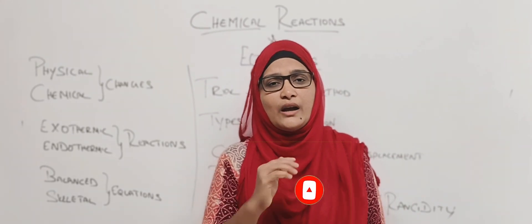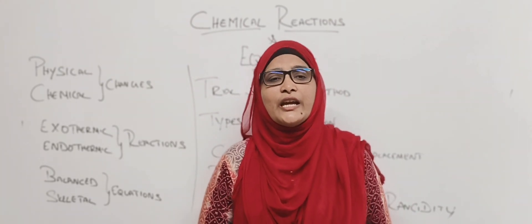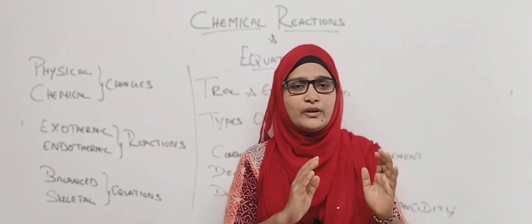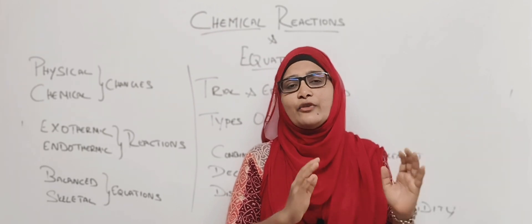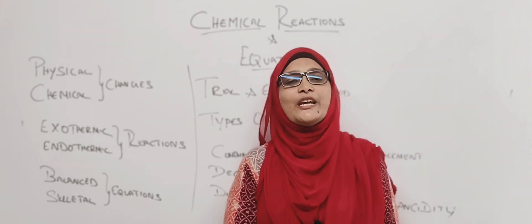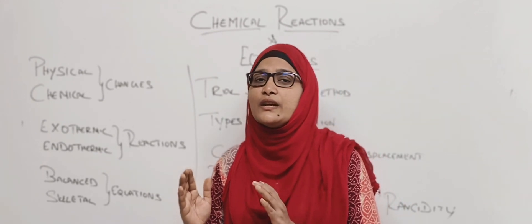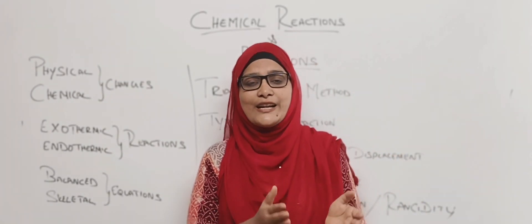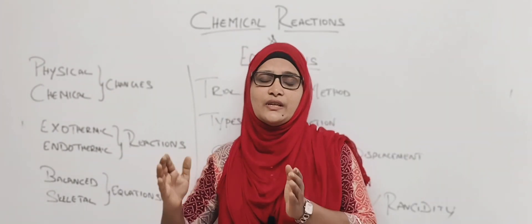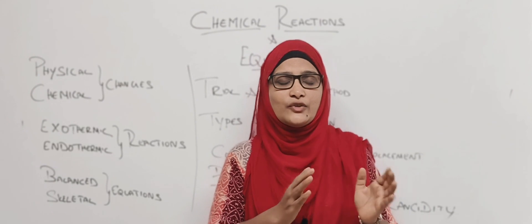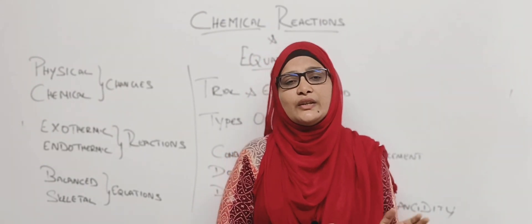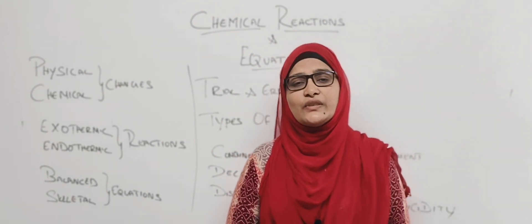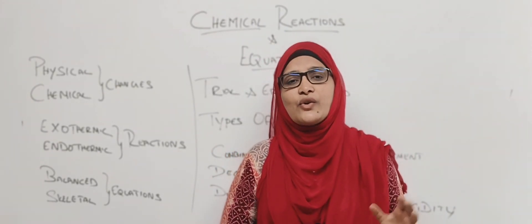In chemical equations, the number of atoms of each element in the reactants should be equal to the number of atoms in the products — LHS should equal RHS. This is called a balanced chemical equation. If the equation is not balanced, it is called a skeletal equation.